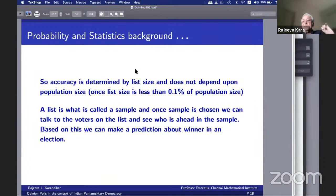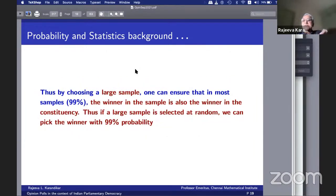This is something which even people who have MSC in statistics, after years of this, they lose this aspect and they have argued with me. The point I've tried to illustrate till now is that by choosing a large sample, one can ensure that in most samples, over 99%, the winner in the sample is also winner in the constituency. Thus, if a large sample is chosen at random, we can pick the winner at 99% probability. But the selection of the sample is extremely important. The word random there is extremely important.